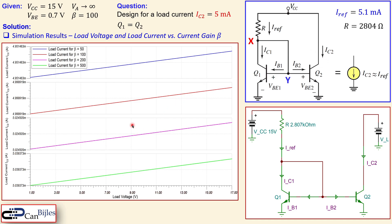This is example number one about the current mirror using the BJT — a very simple example. We will discuss more detailed examples in future videos, so stay tuned. If you have any questions about this example, please let me know in the comments and I will try to answer as soon as possible. Don't forget to like and share these videos so we can reach more people. Thanks for your cooperation and see you next time.